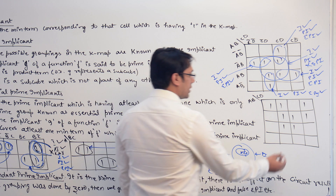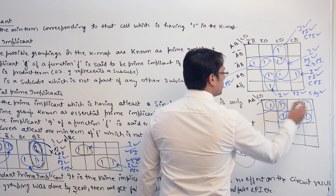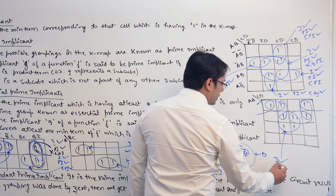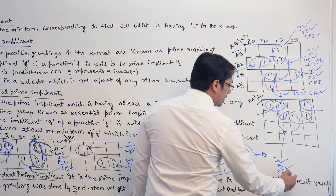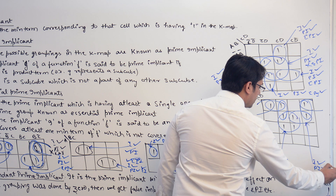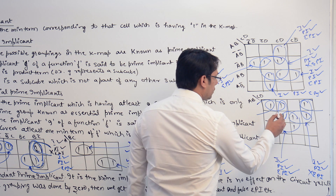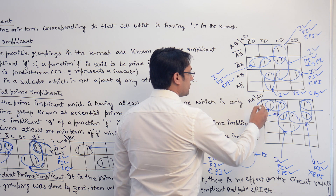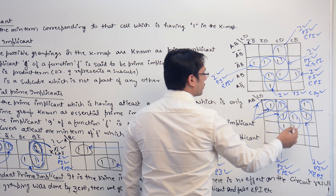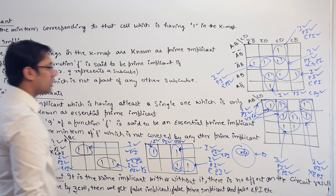Now if you take this K-map, we can make subcubes like this, like this, like this, this, this, as well as this. The bigger subcube is an implicant, it is a prime implicant, as well as it is an essential prime implicant. Another subcube is an implicant and a prime implicant, but it is not an essential prime implicant, because both of its ones can also be covered by other subcubes. The remaining four subcubes are all implicants and prime implicants, but they are not essential prime implicants.